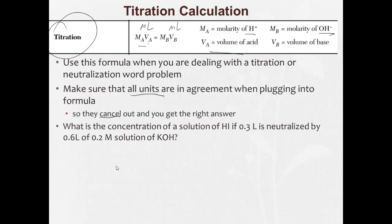So here's an example. What is the concentration of a solution of hydroiodic acid if 0.3 liters is neutralized by 0.6 liters of 0.2 molar solution of KOH? So we have to use our titration formula, MAVA equals MBVB. And like always, MA equals, VA equals, MB equals, VB equals. What is the concentration of a solution of HI? So the concentration is molarity, so that's what we're solving for. If 0.3 liters, so that's our volume, 0.3 liters, is neutralized by 0.6 liters, so that's our VB, 0.6 liters of a 0.2 molar. That's our concentration, 0.2 molar solution, KOH.